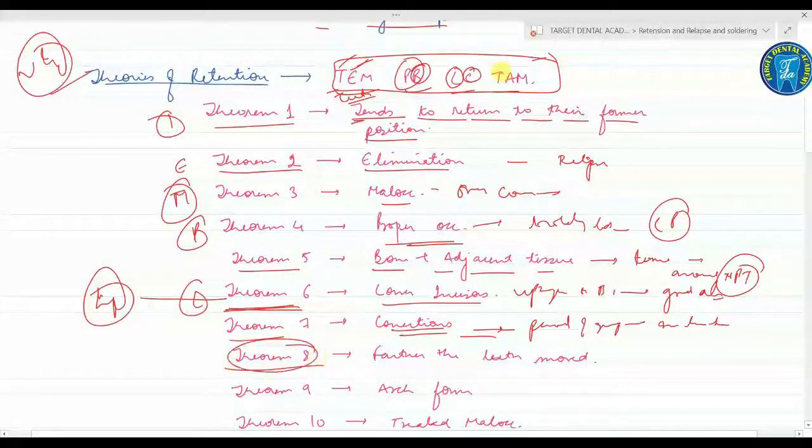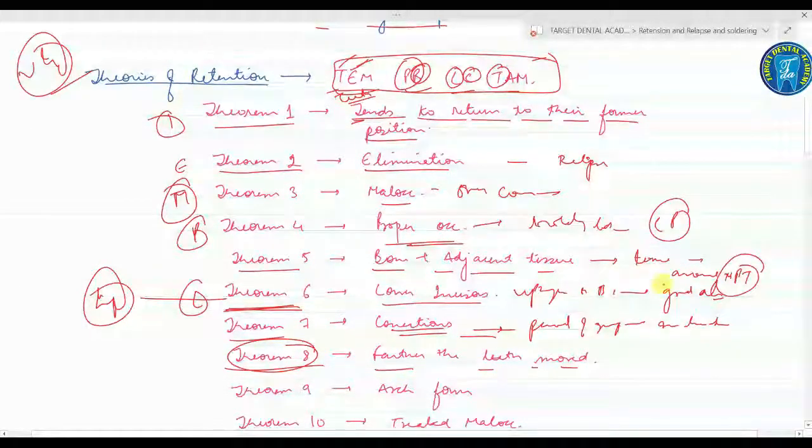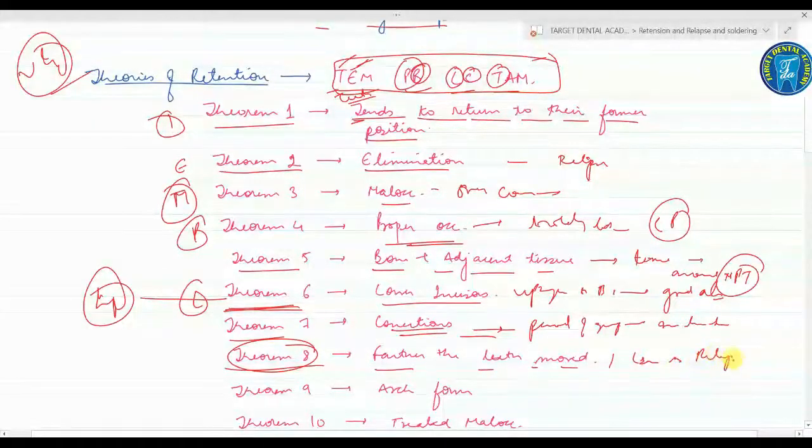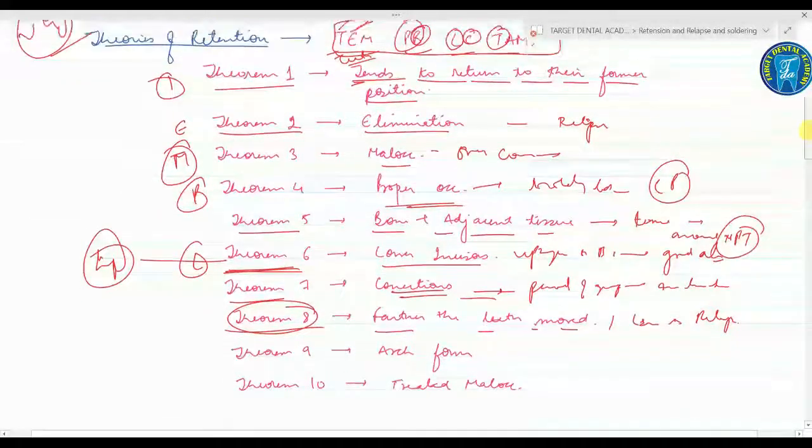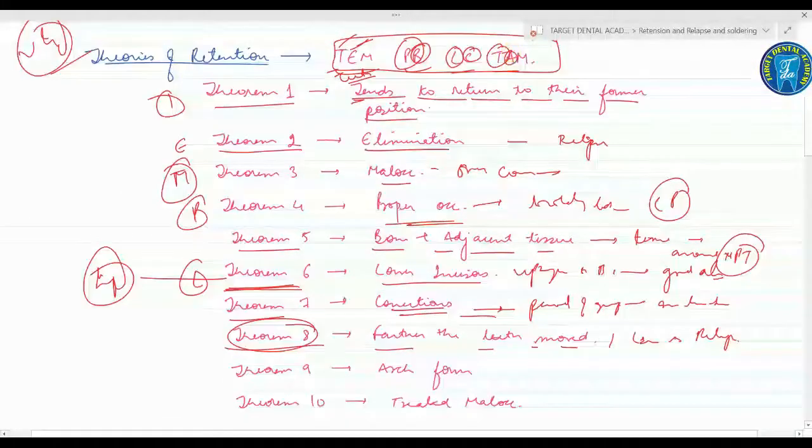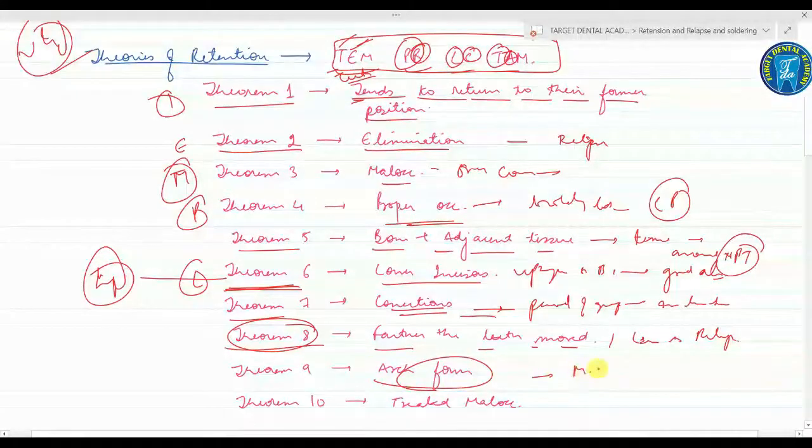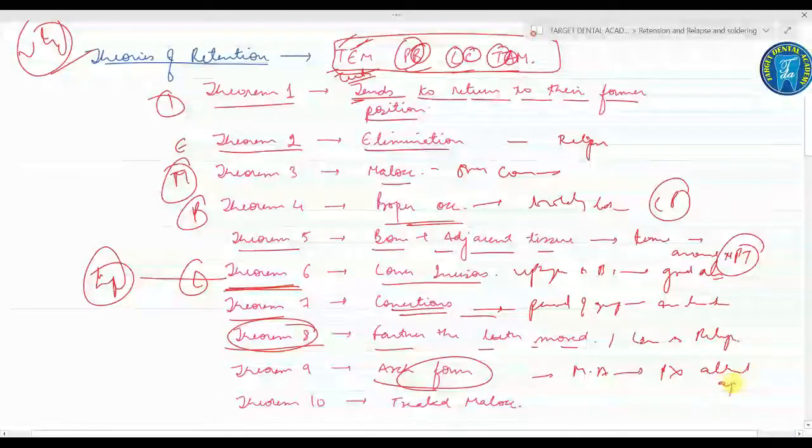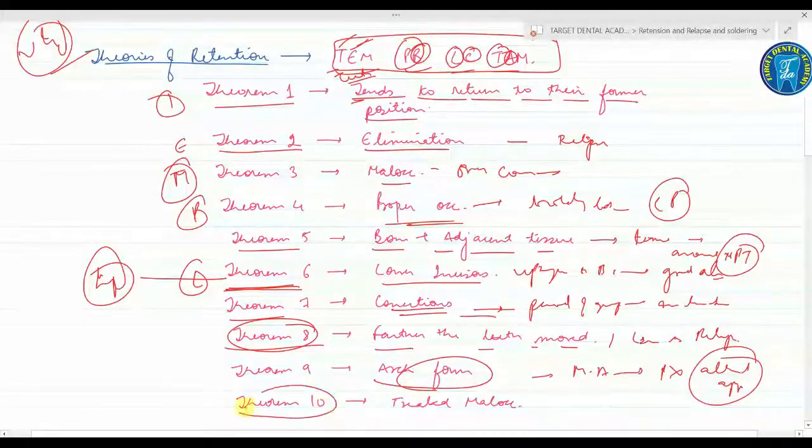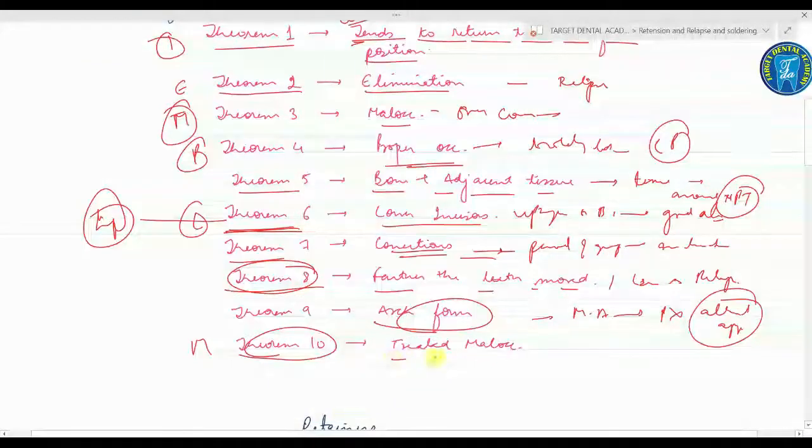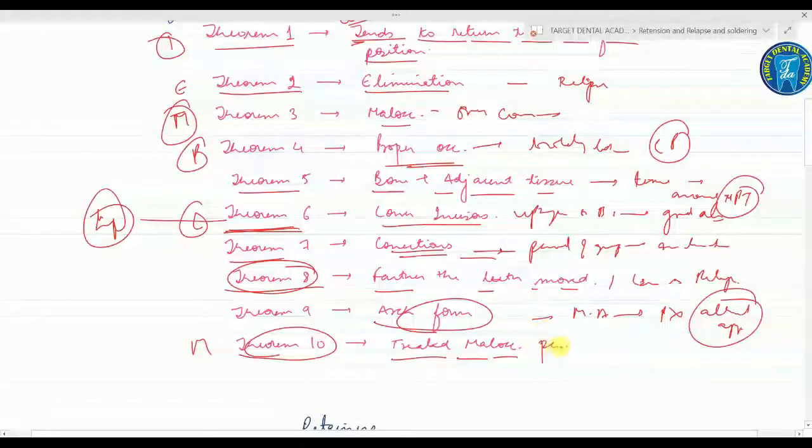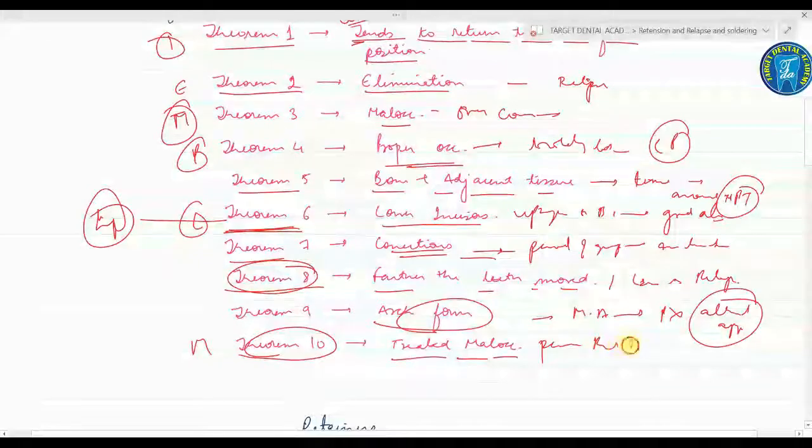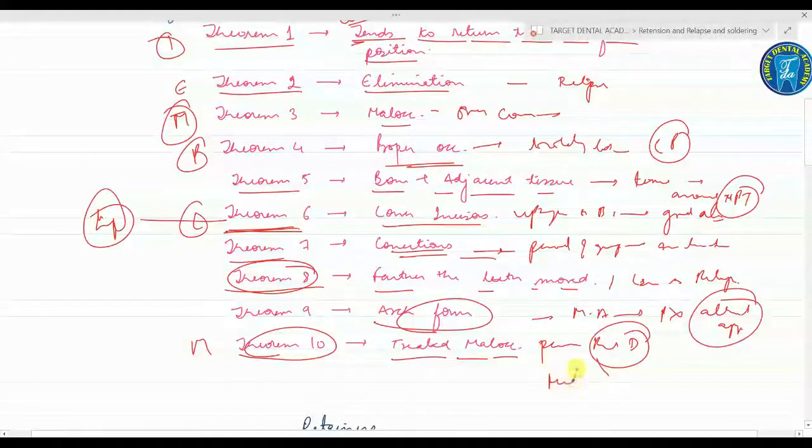Theorem eight, T means the farther the teeth move, the lesser is the risk of relapse. Theorem nine, A means the arch form, particularly in the mandibular arch, cannot be permanently altered by appliance therapy. Theorem ten means many treated malocclusions require permanent retaining devices, for example the midline diastema - MCQ.